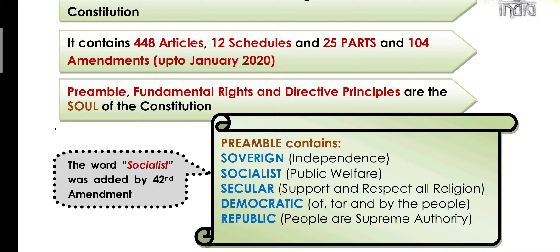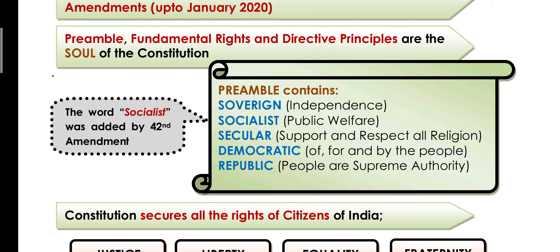The preamble contains the word 'sovereign,' which means that India is not under some ruling country or under someone — India is an independent country. India is not under anyone; nobody is ruling it. It's an independent state.